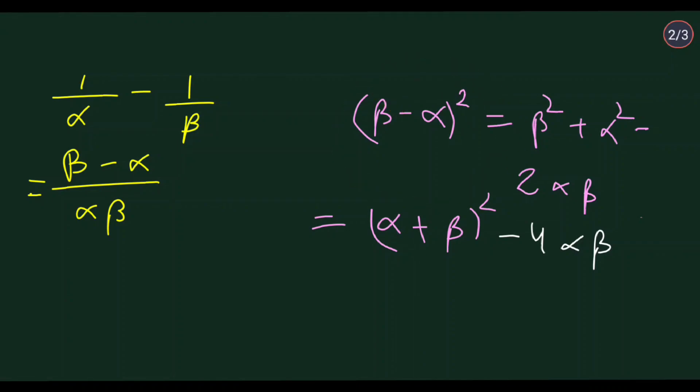So if we remove the square, then you will get beta minus alpha equals root of alpha plus beta whole square minus 4 alpha beta. You can write this value here, and we'll solve this on the next page.